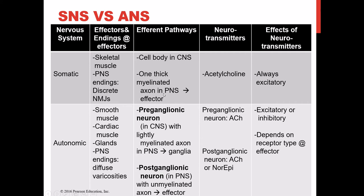For the autonomic nervous system, the pathway involves two neurons — a pre-ganglionic neuron and a post-ganglionic neuron — which means there's also a ganglia, a cluster of cell bodies, in the peripheral nervous system. The pre-ganglionic neuron has its cell body in the central nervous system, with a lightly myelinated axon that extends to the ganglia. The post-ganglionic neuron goes from the ganglia out to the effector organ and tends to be an unmyelinated axon.